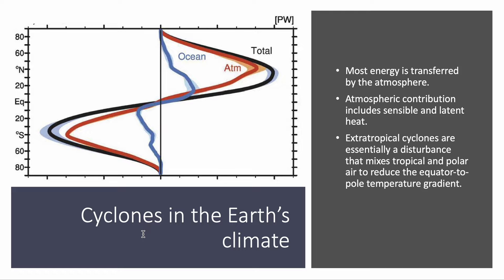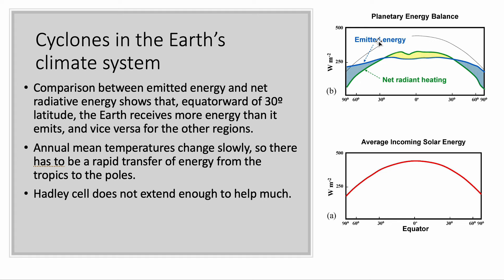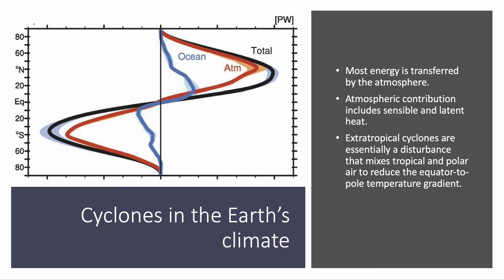This suggests that there has to be some kind of transfer of energy from the tropics to the poles. Most of the energy on Earth comes in the tropics because this is where the sun is at its zenith, so sun rays arrive at a near-perpendicular angle, delivering most of the energy to these regions. When you move to polar regions, much less energy is delivered. If the planet had Hadley cells going from the equator all the way to the poles, as Hadley envisioned, then the Hadley cell could be the primary mechanism responsible for this redistribution of energy.